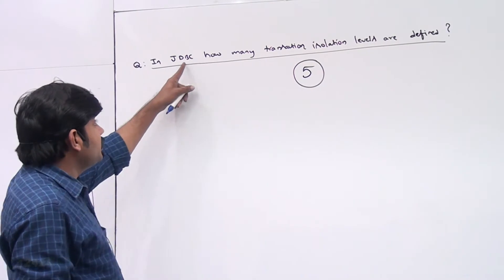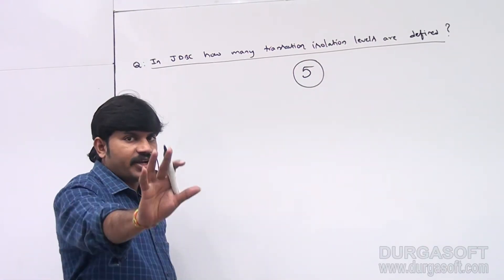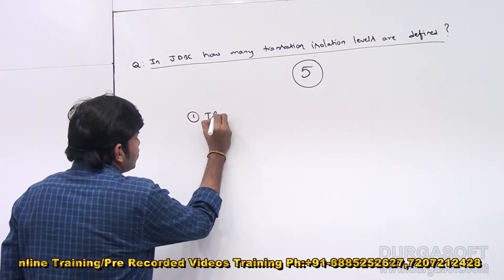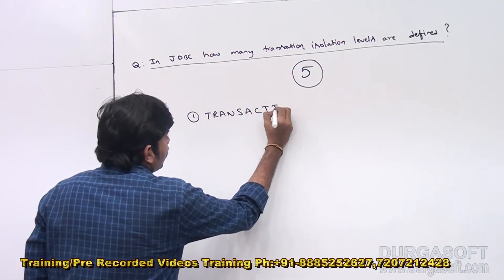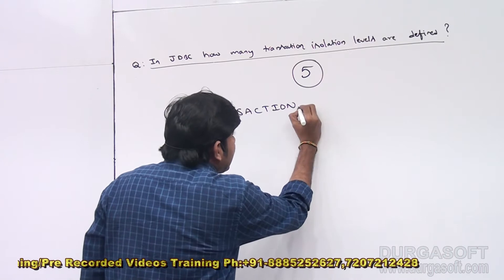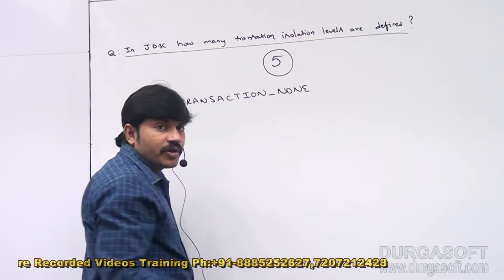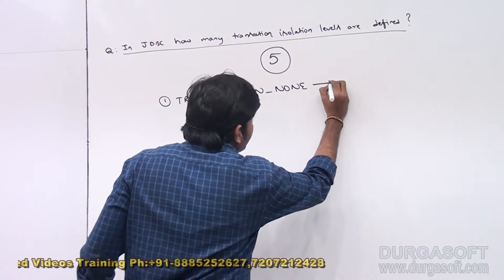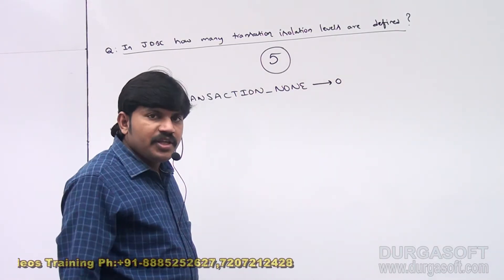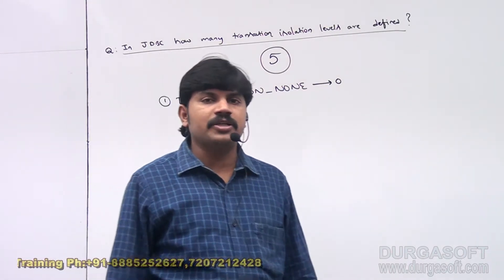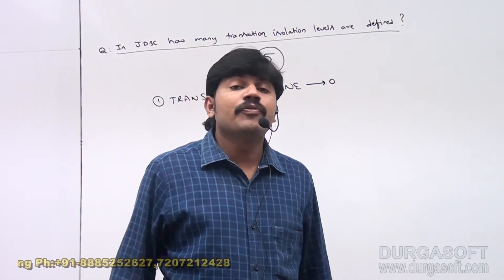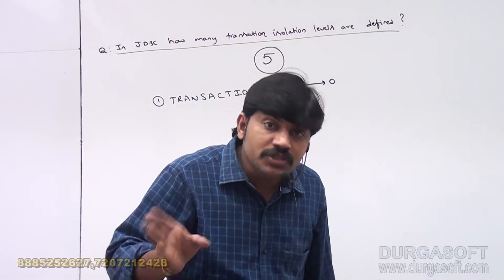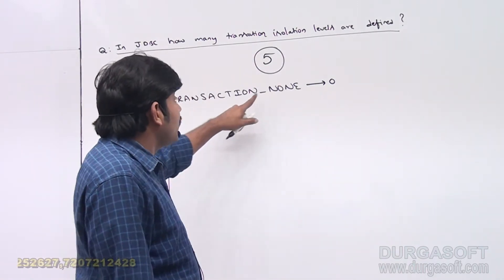This is a very important question for the interview room. In JDBC, how many transaction isolation levels are defined? The answer is 5. The first one is TRANSACTION_NONE — its constant value is zero. The meaning of TRANSACTION_NONE is that my database won't provide support for transactions. If you want to indicate that your database won't support transactions, you use the TRANSACTION_NONE isolation level.